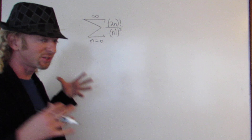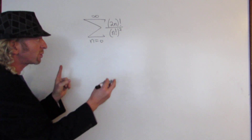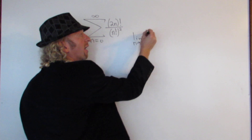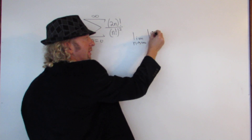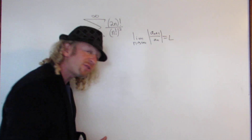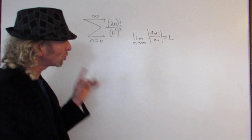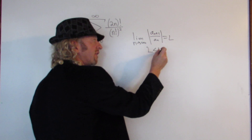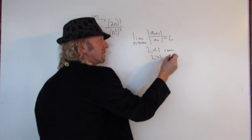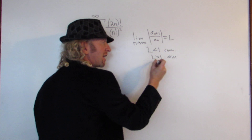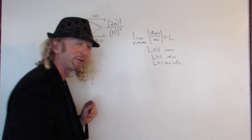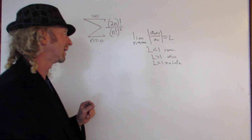I haven't done this problem yet, so we'll see. The ratio test says: if you take the limit as n approaches infinity of a_{n+1} over a_n, in absolute value, and you get L — one of three things can happen. If L is less than 1, then the series will converge. If L is bigger than 1, then the series will diverge. And if L is equal to 1, then the test fails — there is no info via the ratio test.